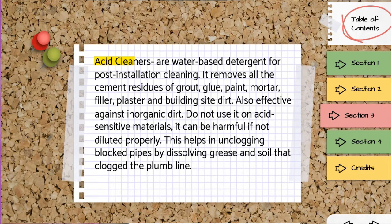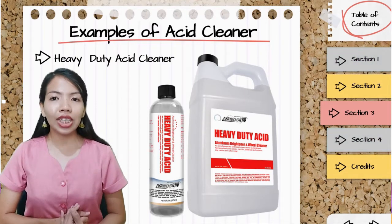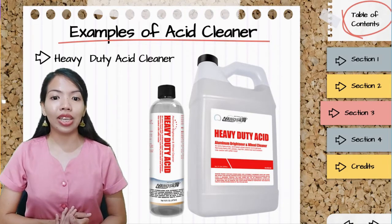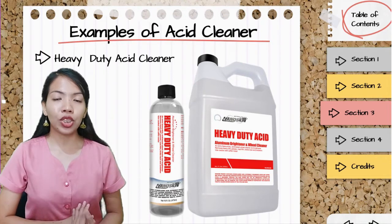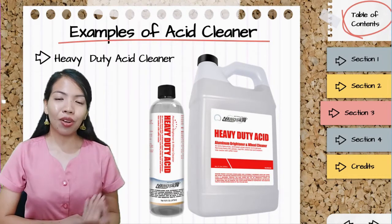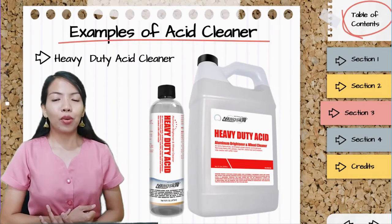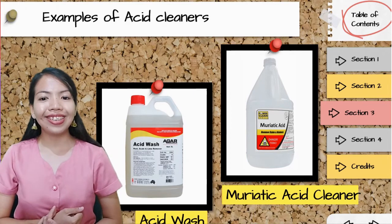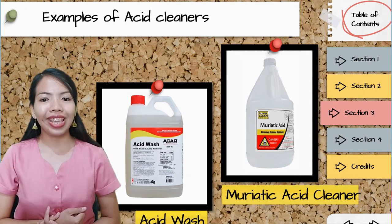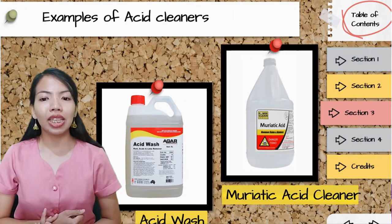This acid cleaner is used for cleaning grout surfaces after the installation of tiles or other granite surfaces. Examples of acid cleaners: the Heavy Duty Acid Cleaner removes heavy dirt, grease, road film, brake dust, and oxidation — use with caution on softer metals as it may change the color or soften the metal. Other examples are Muriatic Acid Cleaner and Acid Wash. Acid Wash is a concentrated acid-based cleaner for dissolving rust, scale, and lime build-ups, also containing detergents to remove oil contamination. It is non-corrosive to stainless steel. Which of the two shown is an acid cleaner?